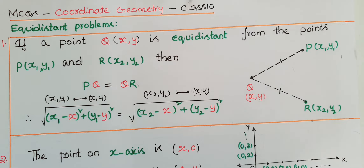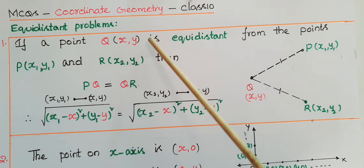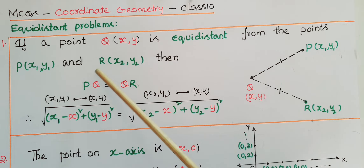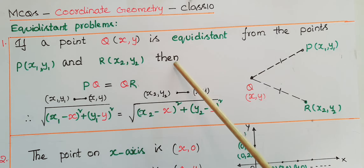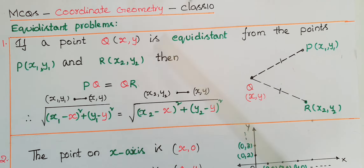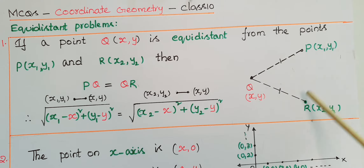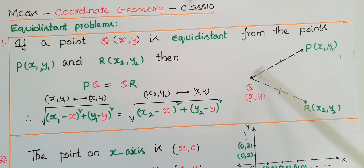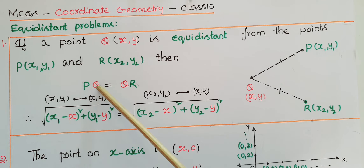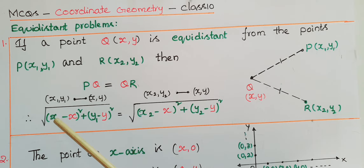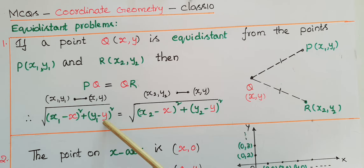Before going to discuss the problems, please remember these points. The first one is: if a point Q(x, y) is equidistant from the points P(x1, y1) and R(x2, y2), then PQ is equal to QR. So this point Q is equidistant from these two points. The distance between these two points we can find by using the formula: square root of (x1 minus x) whole square plus (y1 minus y) whole square.